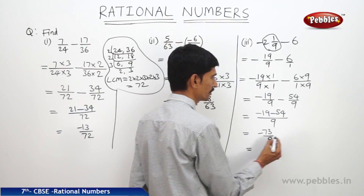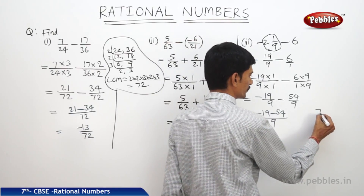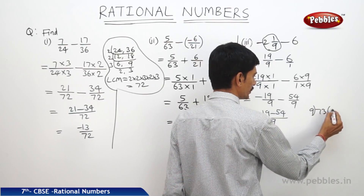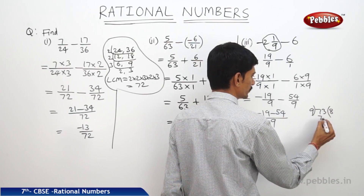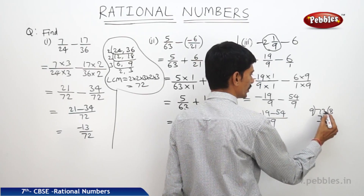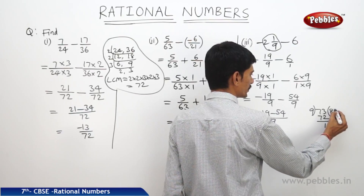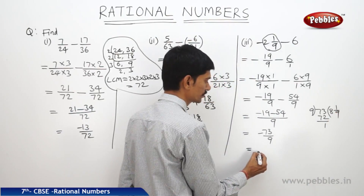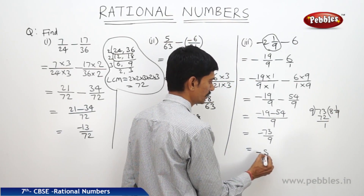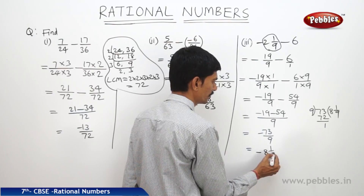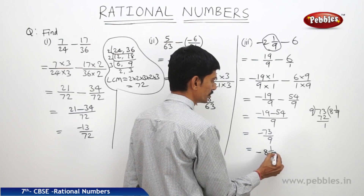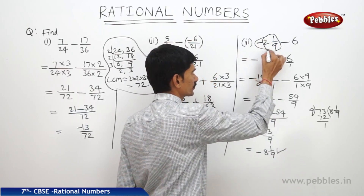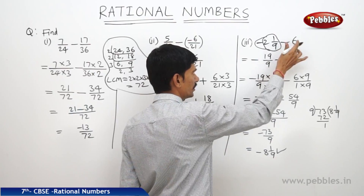When we divide 73 by 9, we get 9 eights are 72 with remainder 1, so that can be written as 1 by 9. Therefore this equals minus 8 1 by 9. This is the difference of the two rational numbers minus 2 1 by 9 and 6.